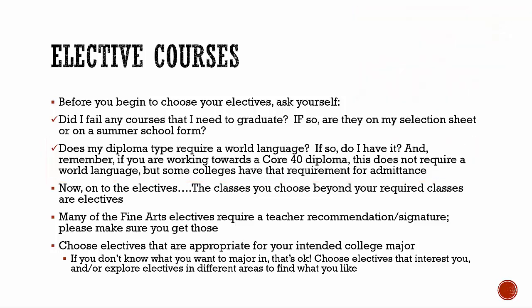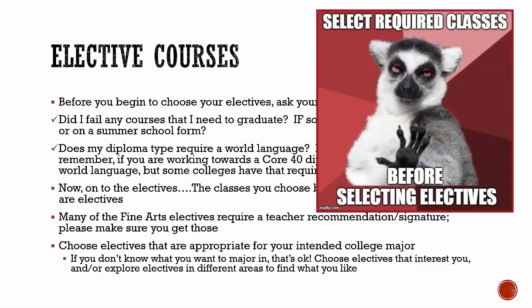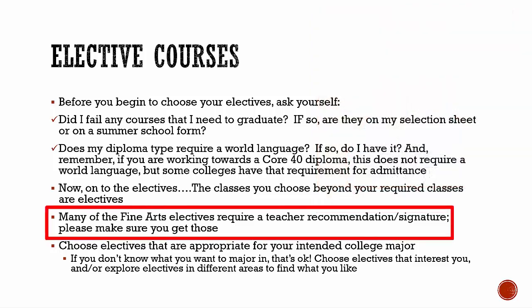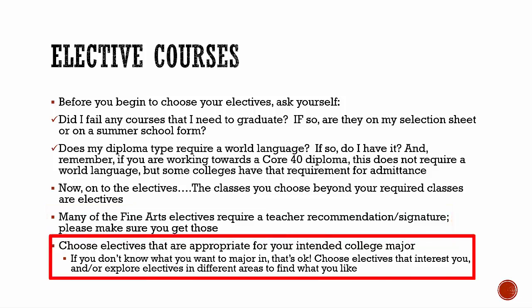Once you are done selecting your required courses, you can then select elective courses. Be aware of teacher recommendations and signatures needed for some elective classes — for example, many fine art classes require a recommendation or signature. Electives are also a great opportunity to select classes in your career or future interest areas, or that relate to what you are going to study in college. If you don't know what you want to do after high school, that's okay — exploring different electives is a great way to find out your interests.